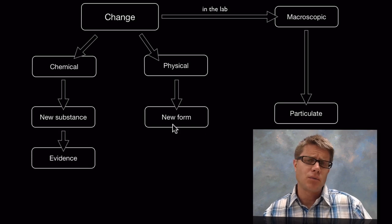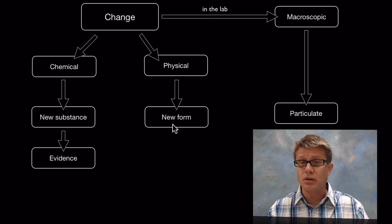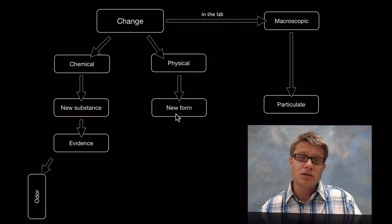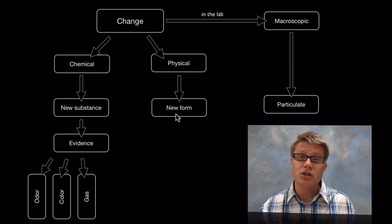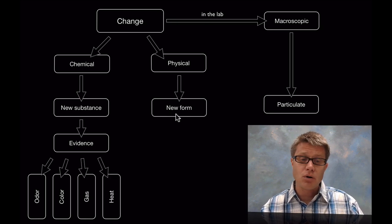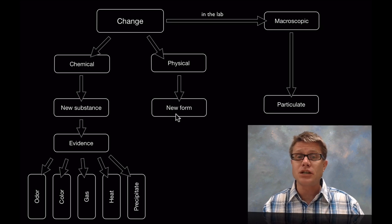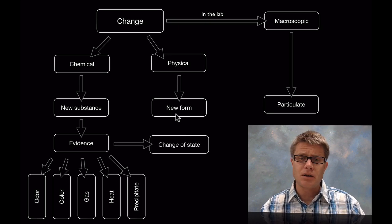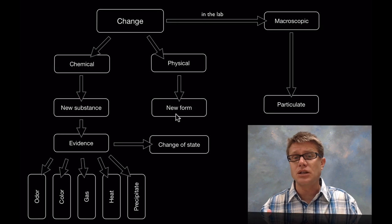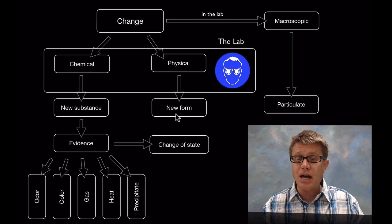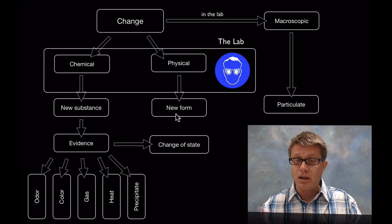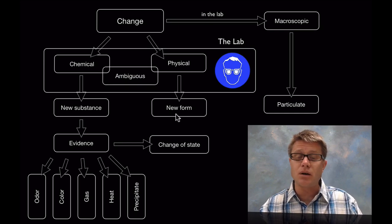What's some evidence we can collect that would show that a chemical change is occurring — macroscopic evidence? Well, we might see a change in odor, or a change in color. Perhaps there's production of a gas, a change in heat, or the formation of a precipitate, meaning the formation of a solid. What evidence would we see that a physical change has occurred? It's simply going to be a change in state. In the laboratory, we collect macroscopic data and then try to interpret what's going on at the particulate level. It's hard — we have to gather a lot of evidence, and sometimes we'll figure out it's chemical, sometimes physical, and sometimes we just don't know. It's ambiguous.